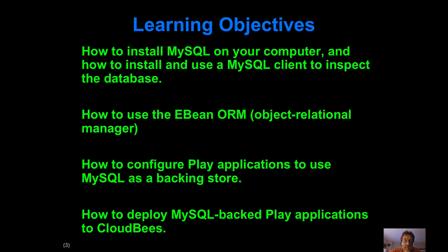Once you've got your Play application working locally and reading and writing data back and forth between the MySQL server running on your own laptop, there's a whole process for taking your Play application and deploying it to the cloud so it can read and write data from a MySQL database running in the cloud. We'll use CloudBees again. The reason I'm selecting MySQL locally is because that's the database CloudBees supports, so the transition to the cloud is a lot easier.